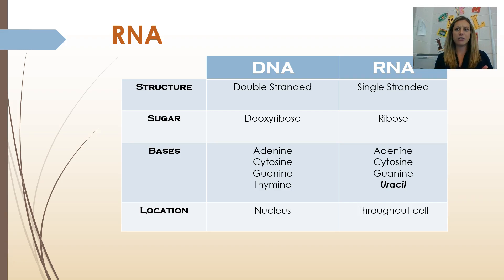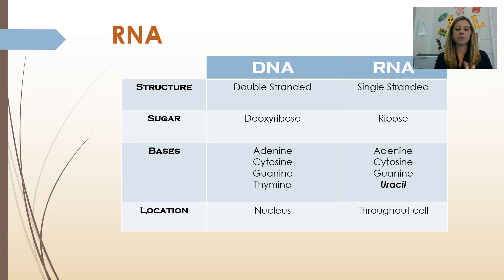If we're going to talk about RNA today, let's spend some time making sure we know the differences between DNA and RNA. DNA, you should know by now, is a double helix — it's double-stranded. Its sugar is deoxyribose, that's where the D in DNA comes from. Its nitrogen bases are adenine, thymine, cytosine, and guanine. Its location is in the nucleus.